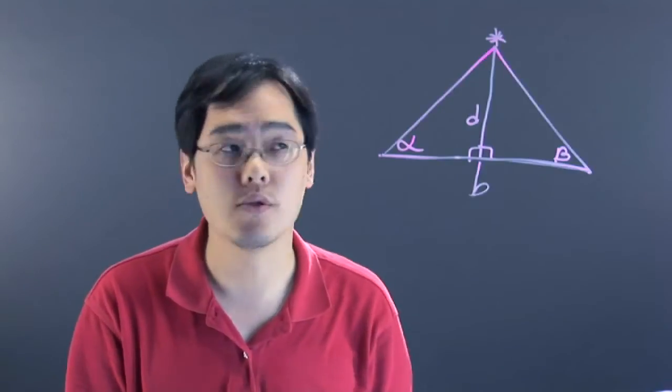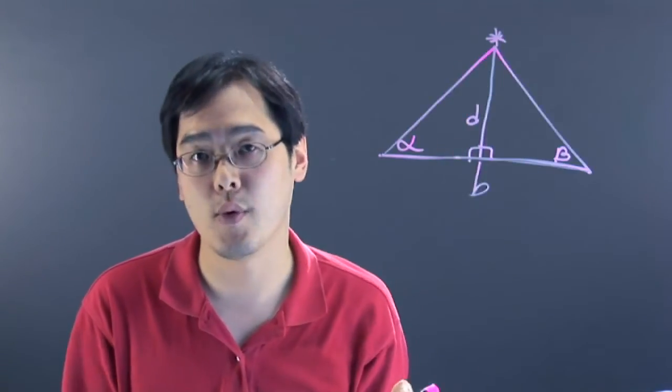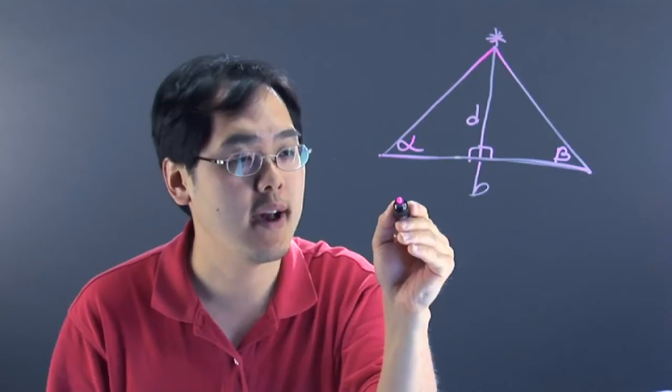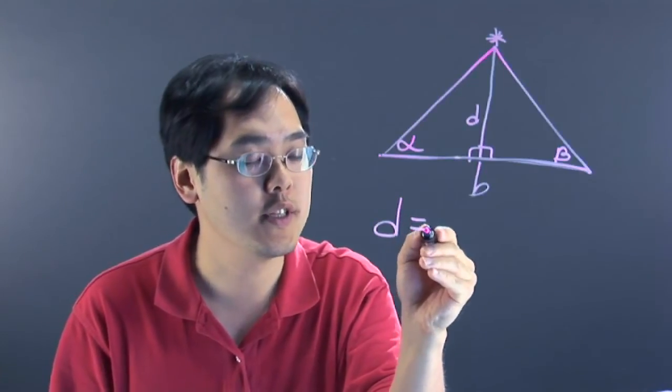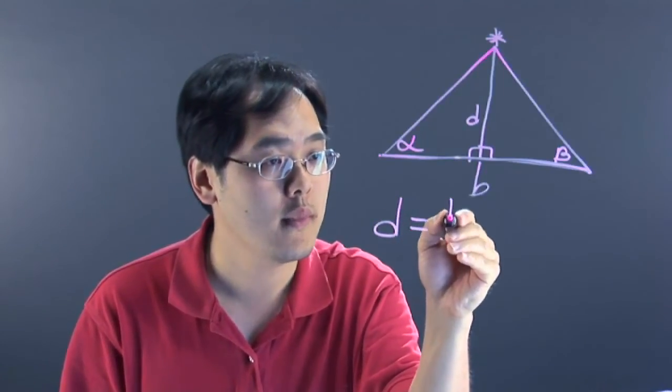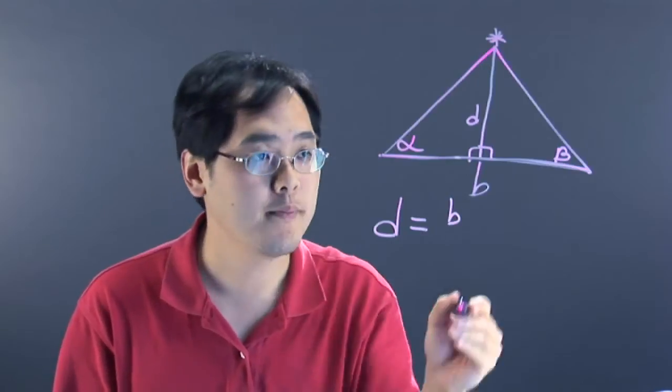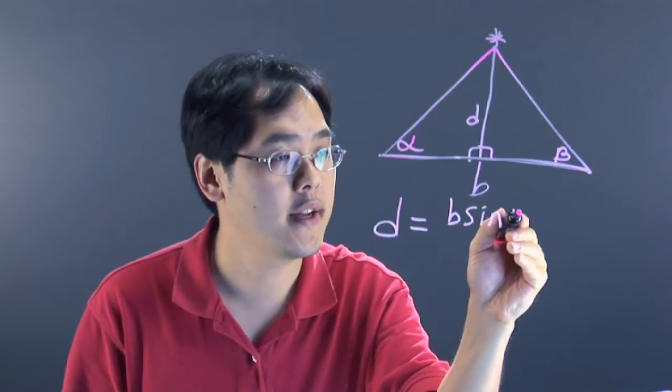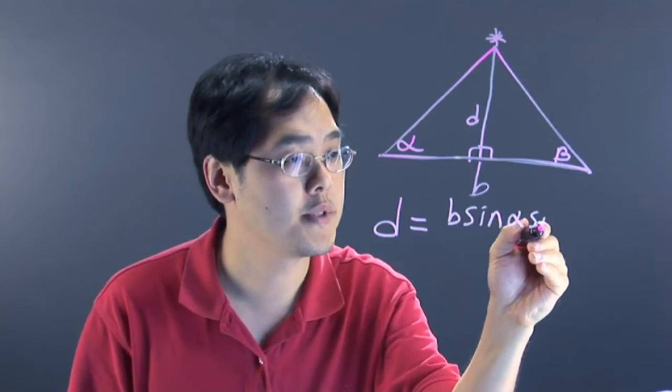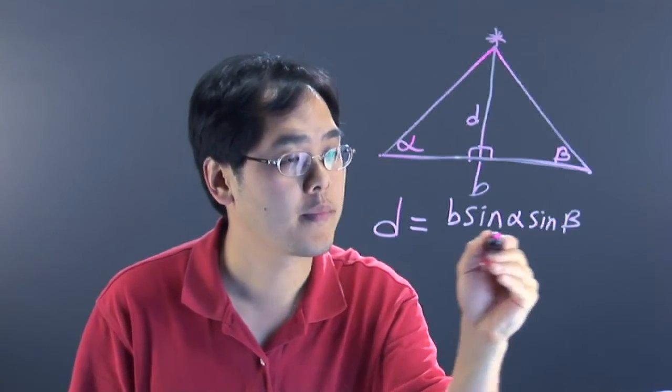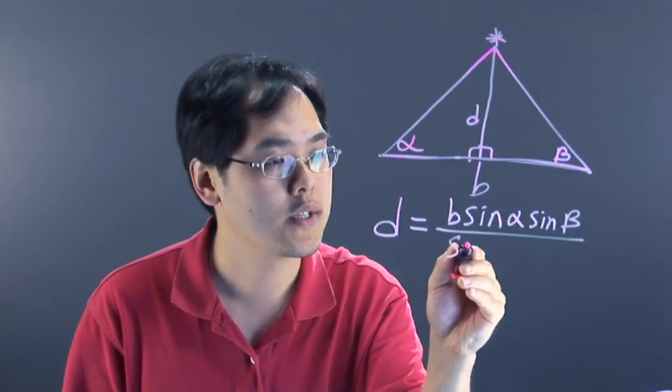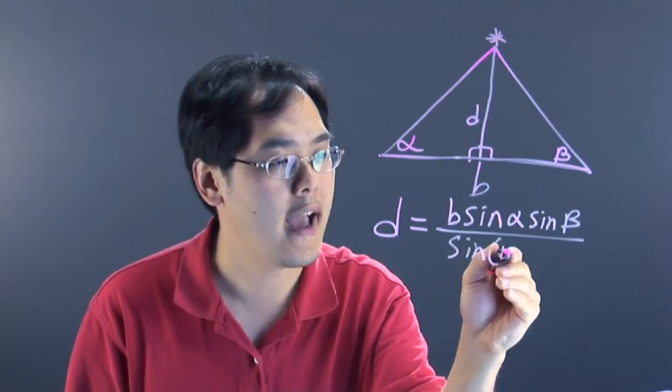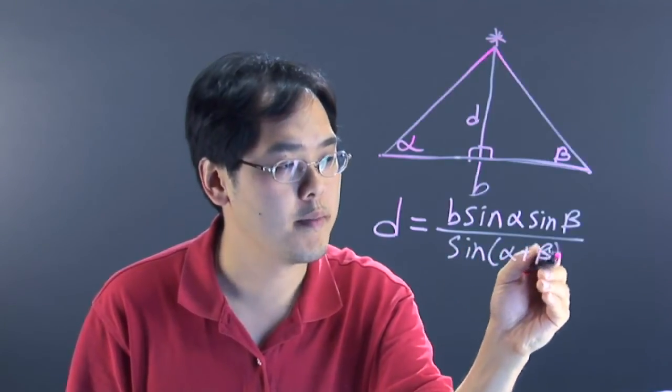Now, there's a formula that you want to use to figure out the distance of this particular point, so let's go right to it. You have D equals the baseline that you already know, B, times sine of alpha times sine of beta over sine of alpha plus beta.